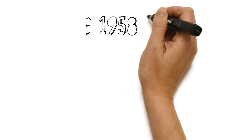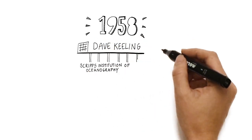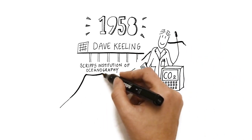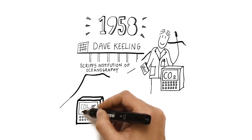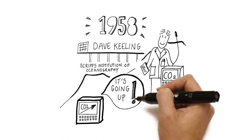In 1958, Dave Keeling, a researcher at the Scripps Institution of Oceanography, took the first measurement of carbon dioxide at Mauna Loa in Hawaii. What he saw had never been seen before. CO2 was rising year by year.